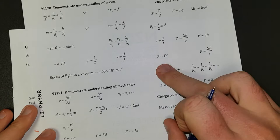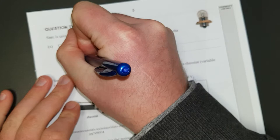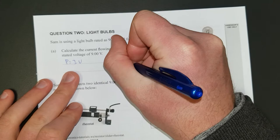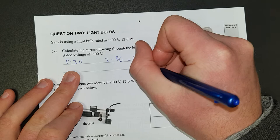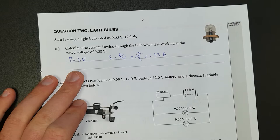On your formula sheet you will see P equals IV, power equals the current times the voltage. What are we trying to find? The current. So we're going to have current is equal to the power divided by the voltage which is equal to 12 over 9, which is equal to 1.33 recurring amps. Easy peasy.